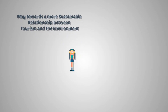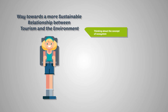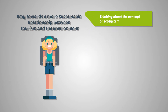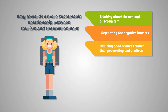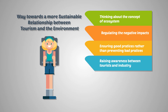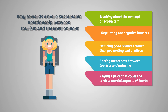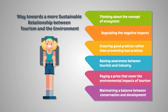Ways for environmental sustainability include considering the concept of ecosystem well-being — forests, fauna, and people who live in the area. Setting regulations such as land use planning and building control. Ensuring good practice — appropriate site selection, suitable scales, the 3Rs (reduce, reuse, and recycle), and energy efficiency. Raising awareness among tourists and industry, paying a price that covers the environmental impacts of tourism, and maintaining a balance between conservation and development.